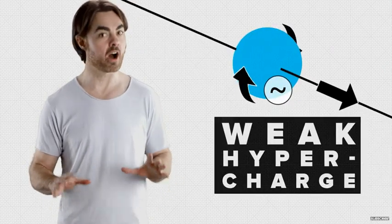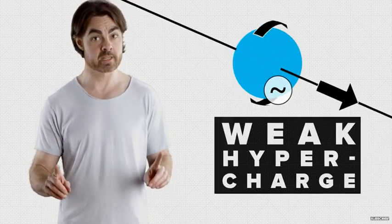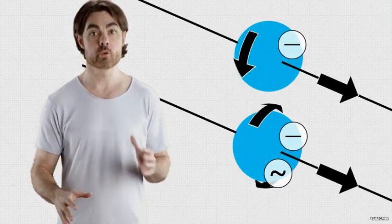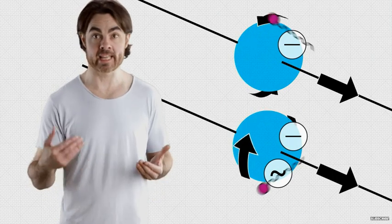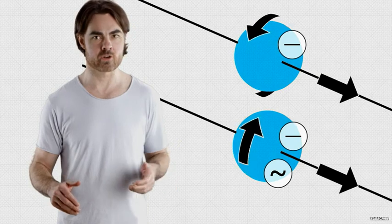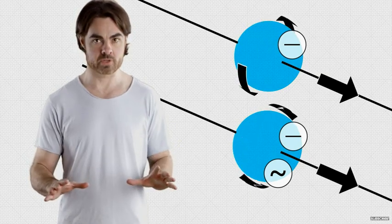Left-handed electrons have this extra little something something compared to right-handed electrons. It's called weak hypercharge, which, by the way, was the name of my high school garage band. It's like regular electric charge, which lets all electrons feel the electromagnetic force, except in this case, only left-handed electrons feel the weak nuclear force.